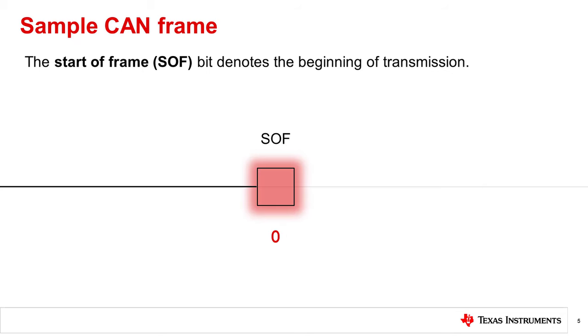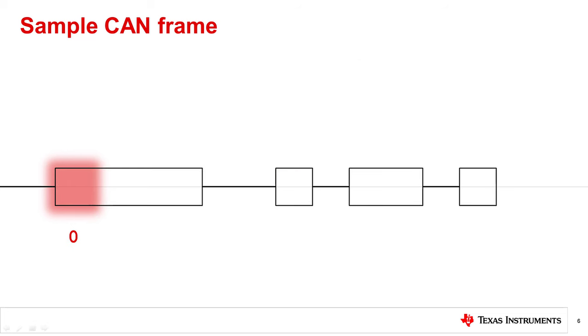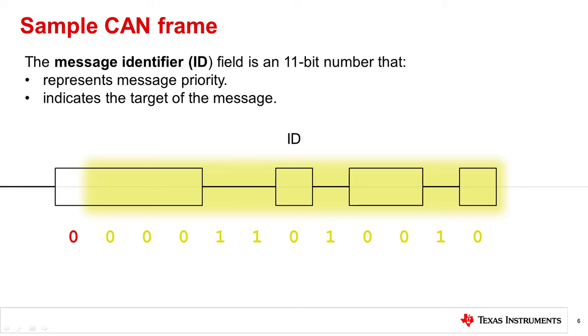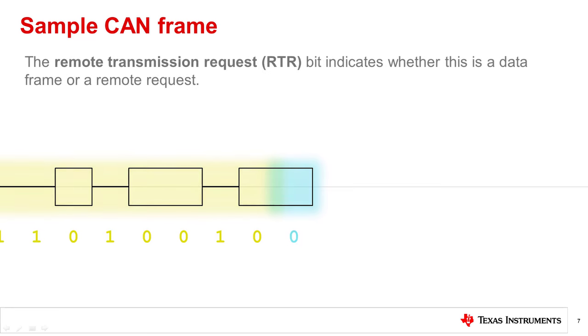Let's take a look at a sample CAN frame from beginning to end. When no device is transmitting, the bus remains idle. When a device begins transmission, it sends a single dominant bit to indicate it will begin transmitting — this bit is called the start of frame bit, or SOF bit. This bit is always dominant, representing a logic zero, and is used to synchronize the nodes on a bus after being idle. Immediately after the start of frame bit is the message identifier field, or ID field. The standard 11-bit identifier establishes the priority of the message and can indicate the target of the message. This is where arbitration occurs. The lower the binary value, the higher the message priority. This message has a binary value of 210.